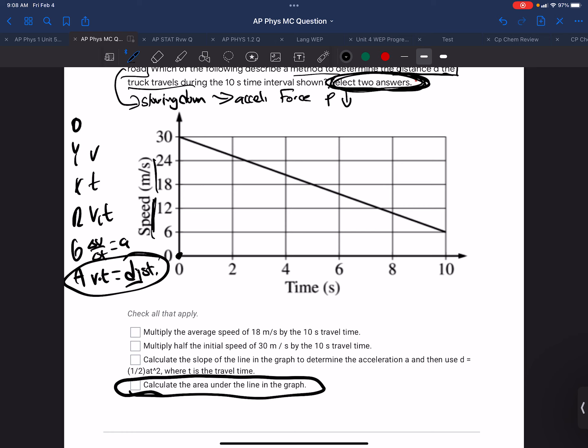So what is another way we could do this? Well, the distance is the area, so our other choices might be equivalent to finding the area. Let's take the average speed of 18 meters per second. Let's see if that's true. Six and 36. So 30 plus 6 divided by 2 is 18. So that is true.